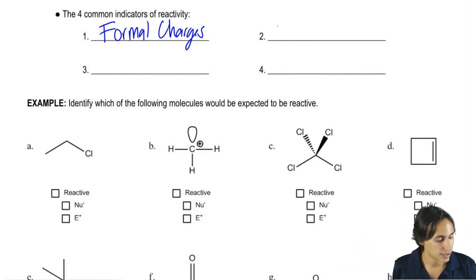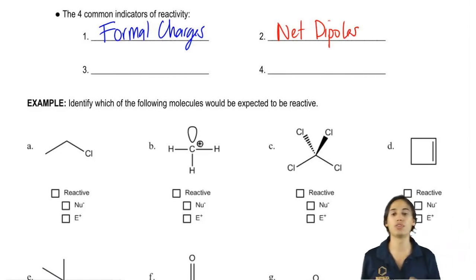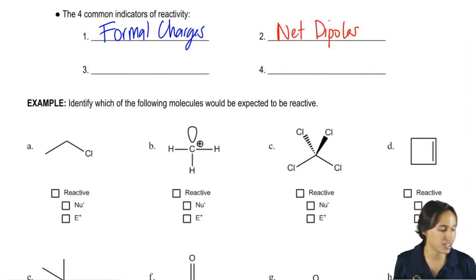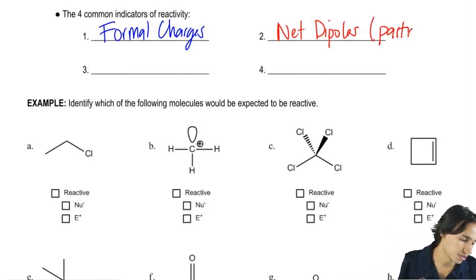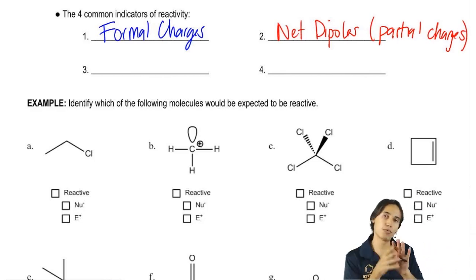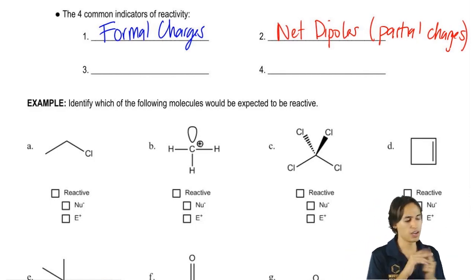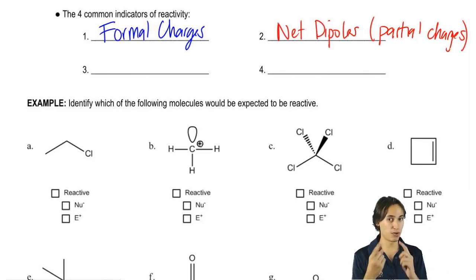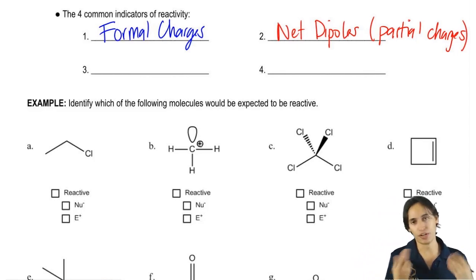The second one is net dipoles. Net dipoles have to do with the fact that I have asymmetrical dipoles that are not perfectly canceling out. What that means is that I'm going to have partial charges in different places. Another way that I could say this is partial charges. So remember that a partial charge is the result of a net dipole. If I have a net dipole going to the right, that means that I would have a partial negative on one side and a partial positive on the other. What I'm basically doing here is I'm saying if you have formal charges, a full charge, that's very reactive. But even if you have a partial charge, that's also very reactive.